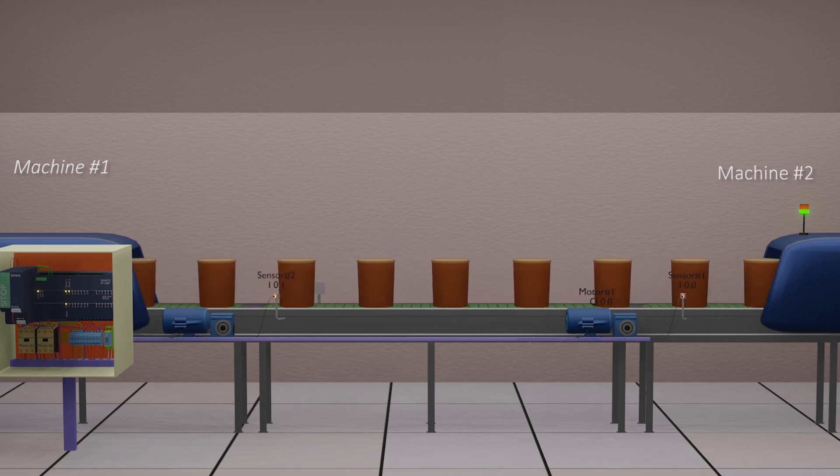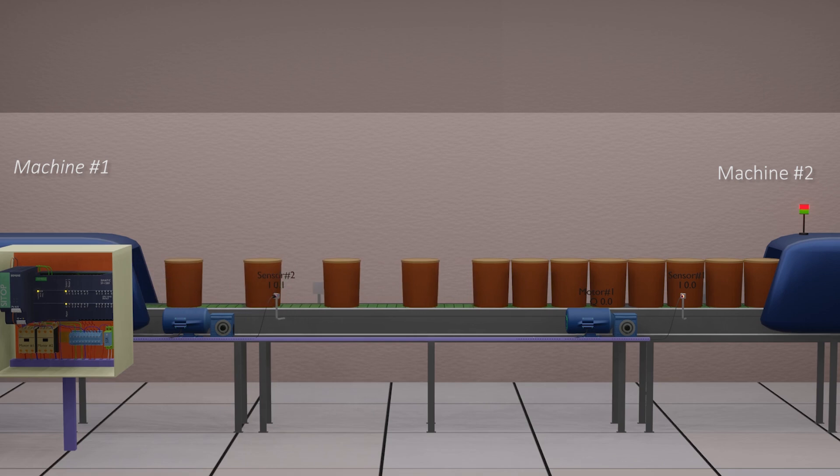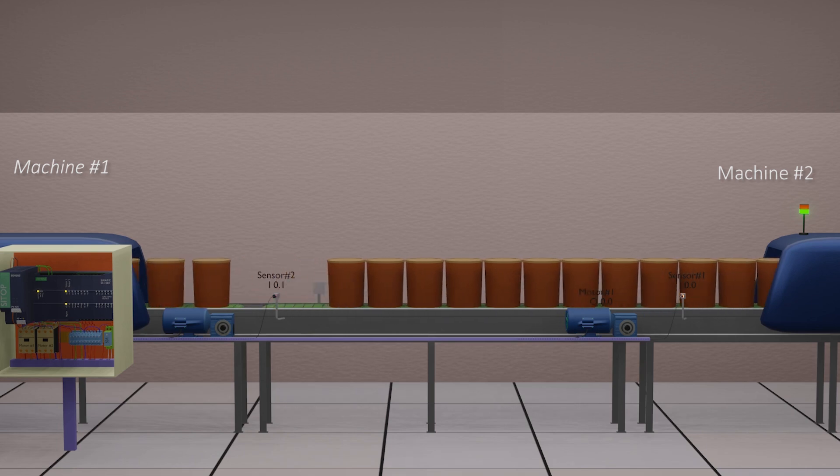If machine number 2 stops, this conveyor should stop and wait until the machine restarts again. After the machine restarts again, this conveyor will start again to transport buckets to the machine.